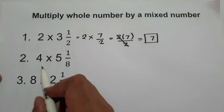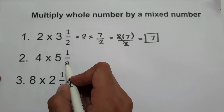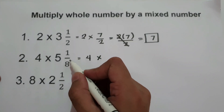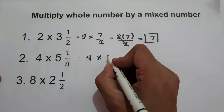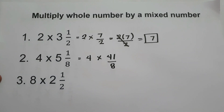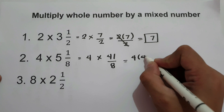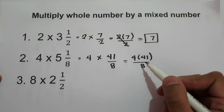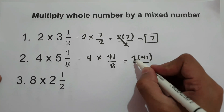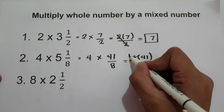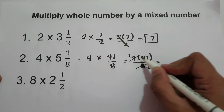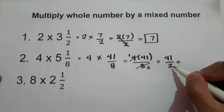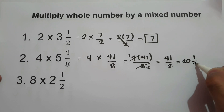What about number 2? We have 4 times 5 and 1 over 8. Change the mixed number into an improper fraction: 8 times 5 is 40 plus 1 is 41 over 8. Then multiply 4 times 41 over 8. Simplify 4 and 8 — giving 1 over 2. So we have 1 times 41 over 2, which is 41 over 2. Then 41 divided by 2 is 20 and 1 half. So this will be our final answer.